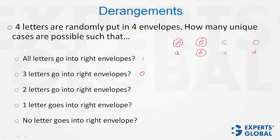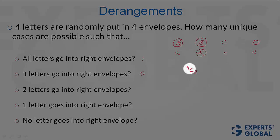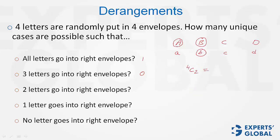Two letters go into right envelopes. How do we do this? First of all, we have to select two letters which go into the right envelopes. So, out of these four letters A, B, C, and D, two can be selected in 4C2 ways, that is 6.